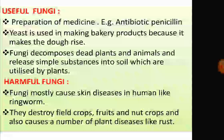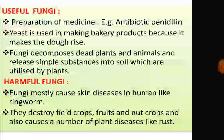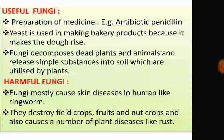Harmful fungi mostly cause skin diseases in humans like ringworm. They also cause infections in the lungs, ears, and nervous system. They destroy field crops, fruits, and nut crops, and cause plant diseases like rust and smut. Common plant diseases caused by fungi include rust and smut in wheat, red rot of sugarcane, and blight of potato.